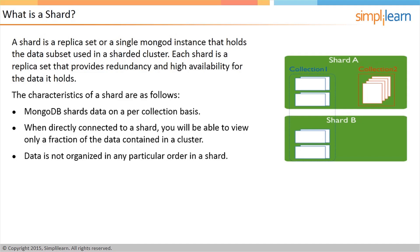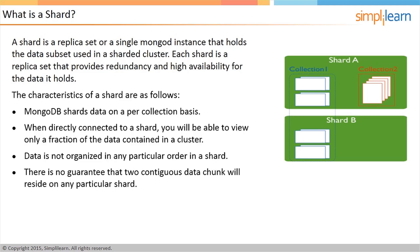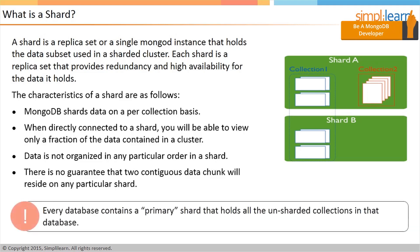Data is not organized in any particular order. In addition, MongoDB does not guarantee that any two contiguous data chunks will reside on any particular shard. Note that every database contains a primary shard that holds all the unsharded collections in that database.